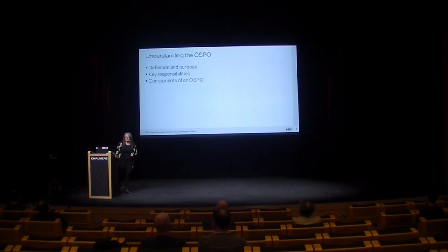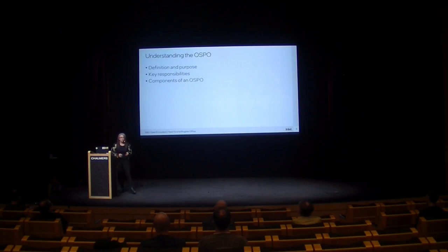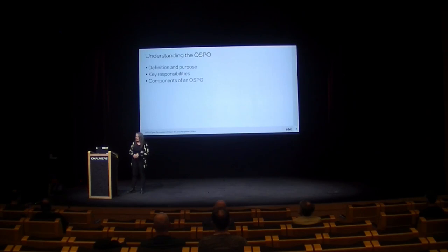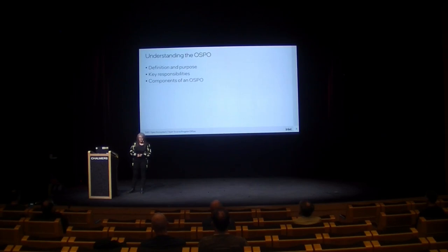Understanding the OSPO: how do we define an open source program office? I define it as a centralized organizational unit within the company that's responsible for setting open source strategy, setting open source consumption and production policies, establishing governance, and implementing compliance plans. The purpose of the OSPO — contrary to developer belief — is not to slow them down. It's not to be a wet blanket. It's actually to help facilitate cooperation with the open source community, help the company be a good citizen, and help developers be successful contributors and participants.